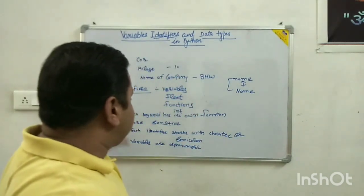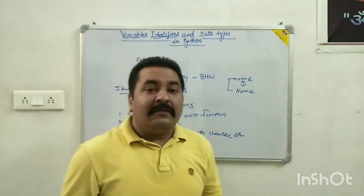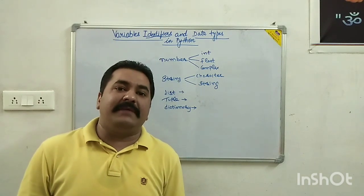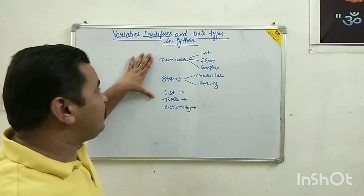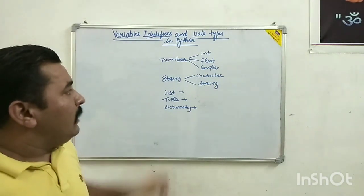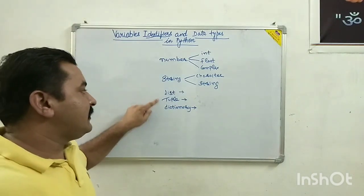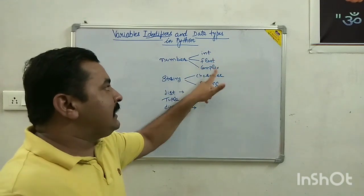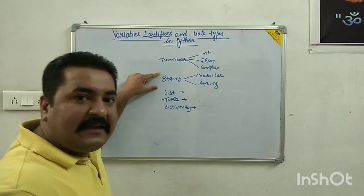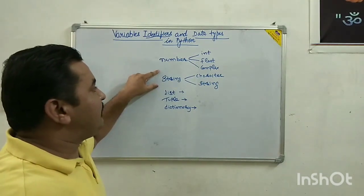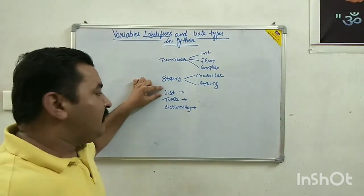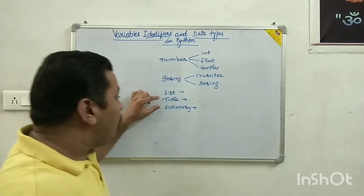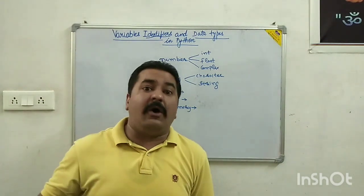Now we will start with data types in Python. We have already covered data types in C programming, but in Python the data types differ somewhat. In Python, we use the data types: numbers, strings, list, tuple, and dictionary. Under numbers, we use int, float, and complex. A string is a combination of characters or integers. We can also use list, tuple, and dictionary as data types.